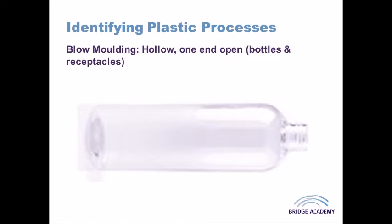Another sign of blow molding is a sprue at the bottom of the product, where the plastic has been snipped off. You will also generally see a seam line going around the outside of the product, showing where the two halves of the mold have been joined together.